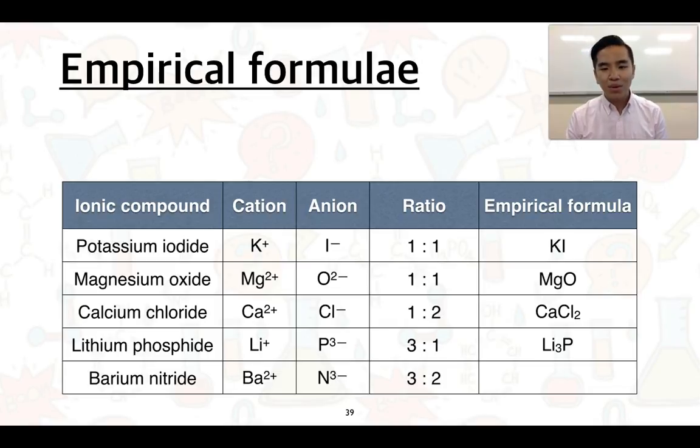Finally, barium nitride: Ba2+ and N3-. This has a ratio of three to two, so its empirical formula is Ba3N2. Keep in mind this is the simplest whole number ratio of the ions.